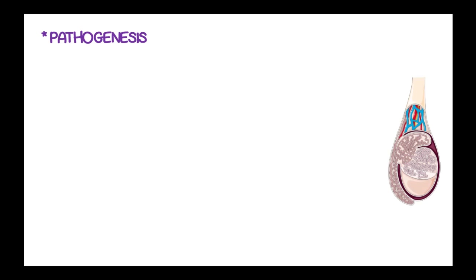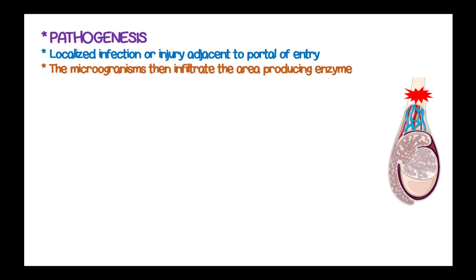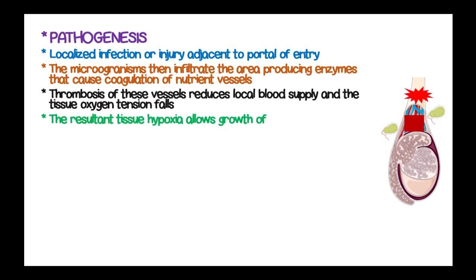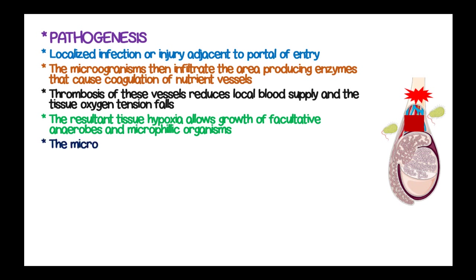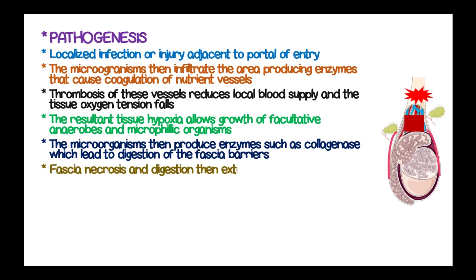The pathogenesis of Fournier's gangrene involves a localized infection or injury adjacent to the port of entry. Microorganisms infiltrate the area, producing enzymes which cause coagulation of nutrient vessels. Thrombosis of these vessels reduces local blood supply and tissue oxygen tension falls. The resulting tissue hypoxia allows growth of facultative anaerobes, and microorganisms then produce enzymes such as collagenase and lipase which lead to digestion of the fascial barriers.